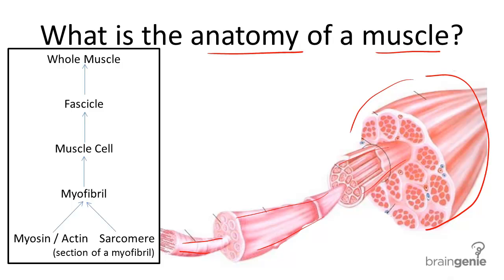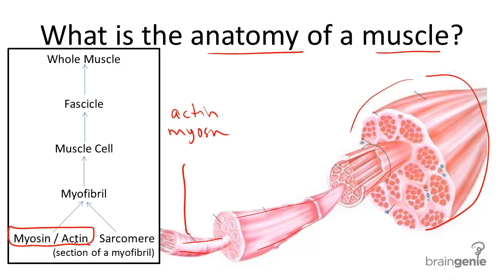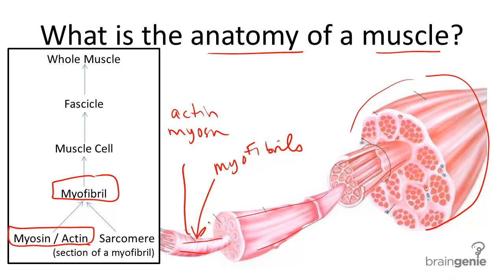The basic structure of the muscle starts with two filaments called actin and myosin, and you can see that down here in our chart. Myosin and actin filaments form long thick fibers and together form what are called myofibrils — right here. You can see many myofibrils that make up a muscle cell right here.